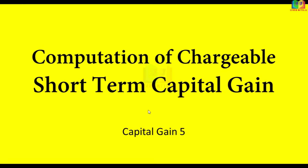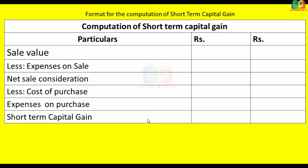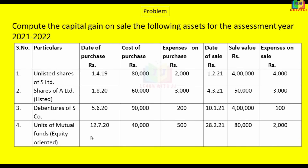In this video, we will talk about the computation of chargeable short-term capital gain chargeable to tax. We will talk about the format and the previous video details. The problem is: compute the capital gain on the sale of the following assets for the assessment year 2021-2022. We will talk about four types of assets, and we will determine the short-term capital asset and long-term capital asset, and determine the short-term capital gain.